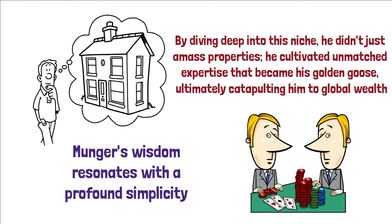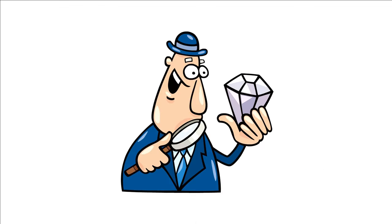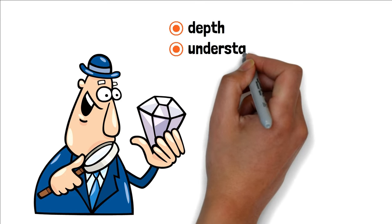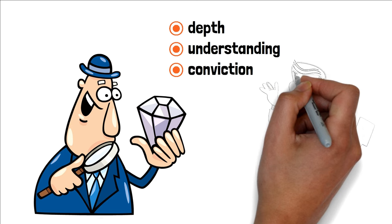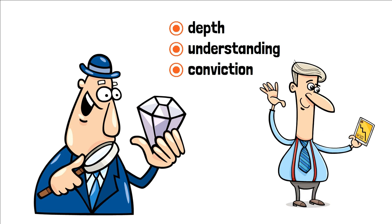By honing in on areas where you have an edge, you're investing not just money, but depth, understanding, and conviction. The depth of knowledge might be the most potent hedge against market unpredictability.